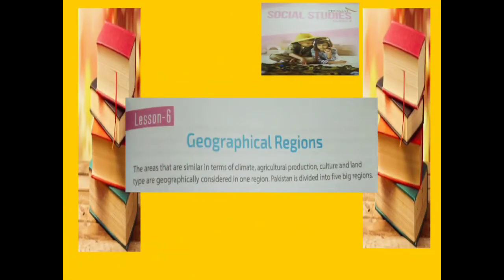Lesson Number Six, Page Number 25. On page number 25, the name of your lesson is Geographical Regions. The areas that are similar in terms of climate, agricultural production, culture, and land type are geographically considered in one region. Once again: the areas that are similar in terms of climate (abohawa), agricultural production (zarae piedawar), culture, and land type are geographically considered in one region.